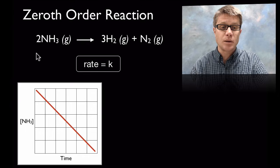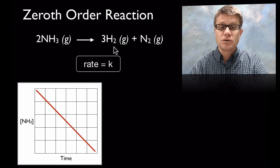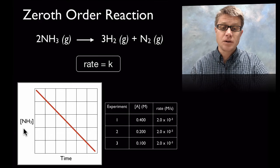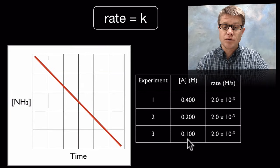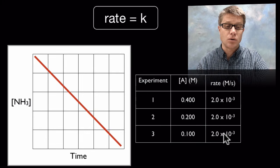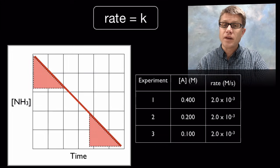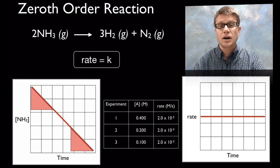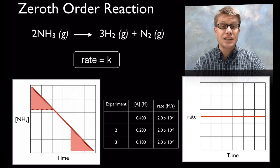In a zeroth order reaction, here's the ammonia example: breaking down ammonia into hydrogen gas and nitrogen gas, rate equals k. It doesn't matter how much ammonia we have — it proceeds at the same rate. If we look at data from three experiments with varying concentration of A, the rate is identical each time. To confirm this from a graph, the slope of the concentration-versus-time line is constant, and if we graph rate over time it's simply a flat straight line.